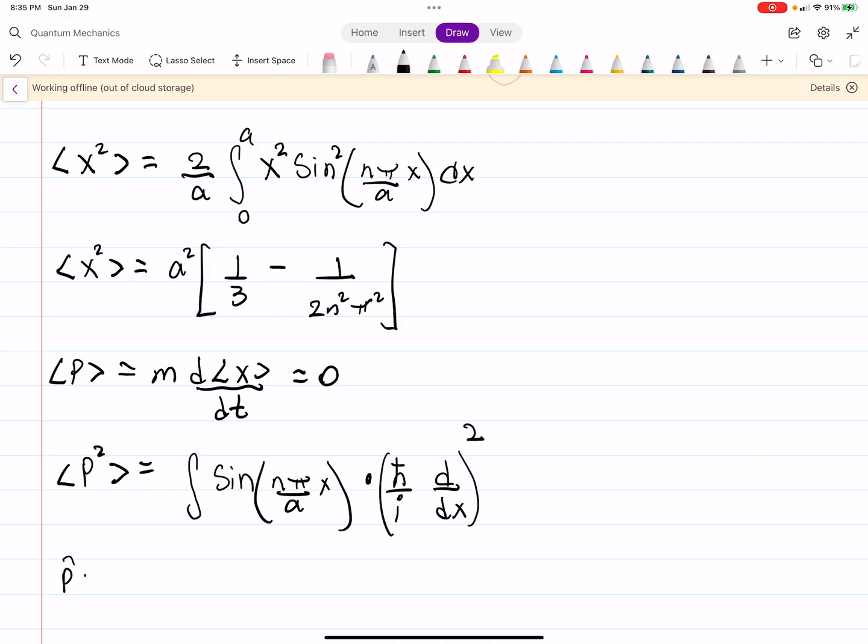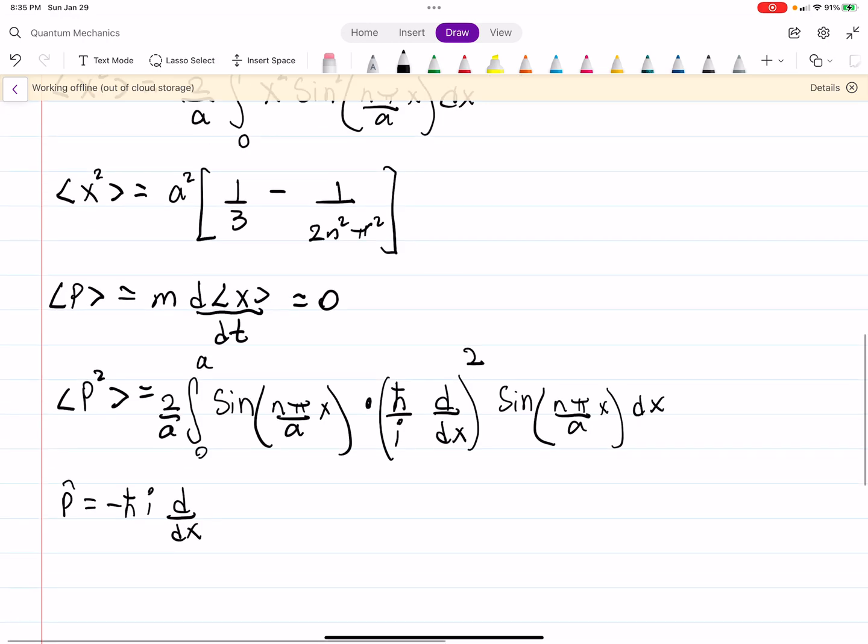So, in general, your momentum operator is minus h bar i d by dx. And this is going to be operating on the wave function that's not complex conjugated, which, in this case, is just sine of n pi over a x dx. It's going from 0 to a. And there's still that normalization constant 2 over a out front.